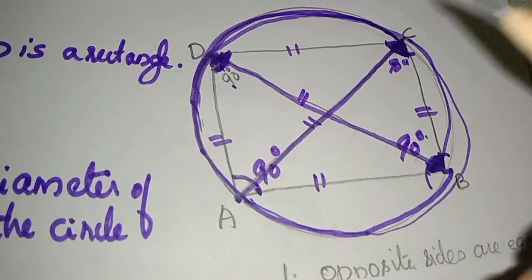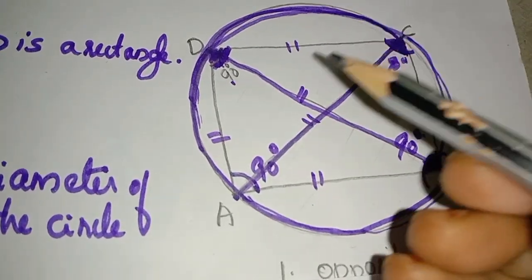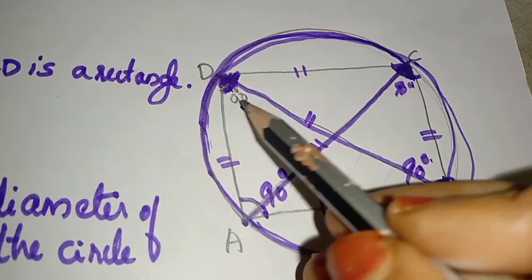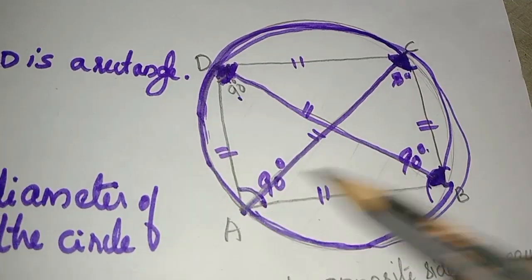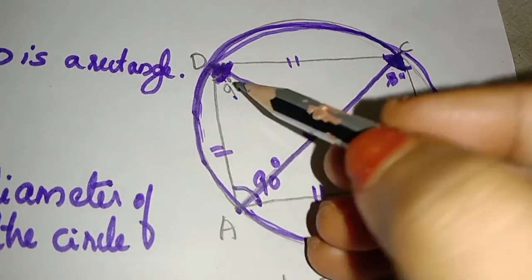2 triangles are congruent. Consider triangle DAB.